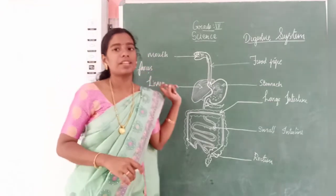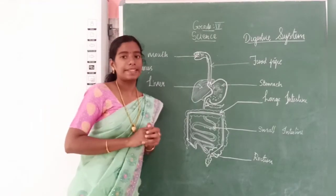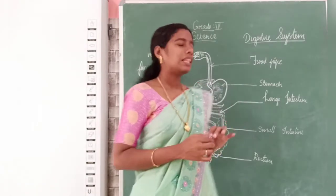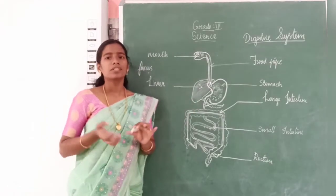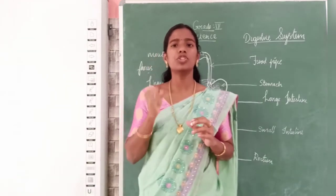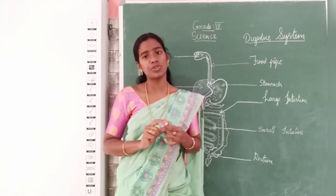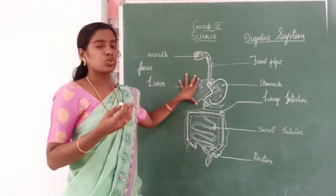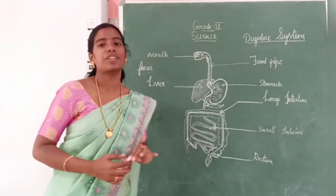In between there is an organ called the liver, which plays an important role in digestion. The liver secretes many digestive juices. For digestion to be complete, the food must be broken down into smaller particles, which is possible only with digestive juices. So the liver produces and provides these digestive juices for digestion.